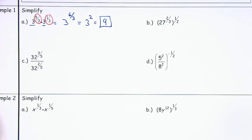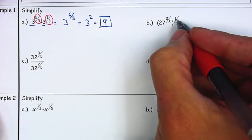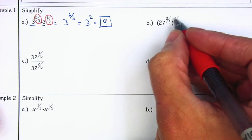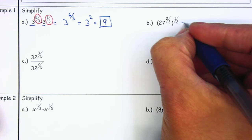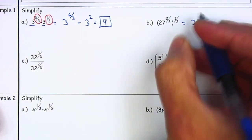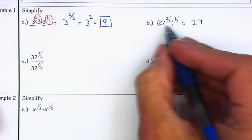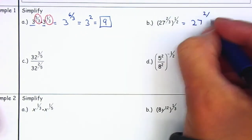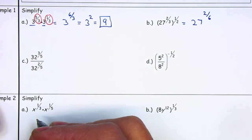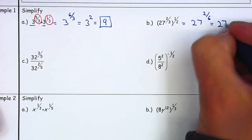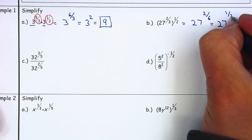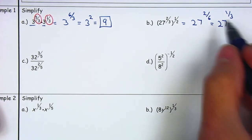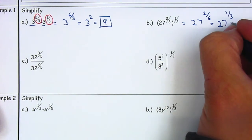For letter B, when the exponents are outside the parentheses we are going to use the power of powers property, which is the second one — we are going to multiply. That will be 27; it stays the same. When you multiply, you don't need to have the same denominator; we can just multiply across. 2 times 1 will give me 2; 3 times 2 will give me 6. I'm going to reduce my fraction — divide by 2 gives me 1/3. Same thing as mentioned: 27 to the 1/3 is the same thing as the cube root of 27, which is equal to 3.